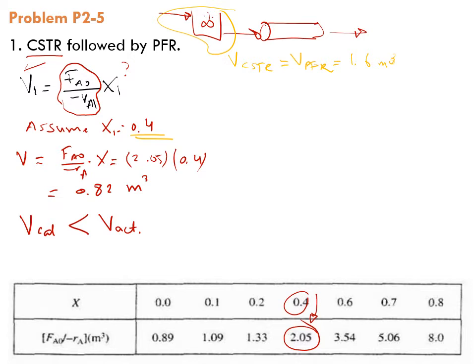What does that mean? That means I could achieve more conversion than only 0.4. Therefore, since V_calculated is less than V_actual, let's assume X to be greater than 0.4.